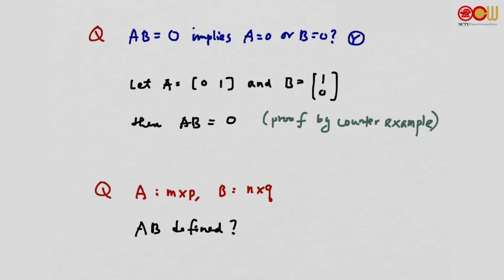Another question: suppose A is an M by P matrix and B is an M by Q matrix. Is the product AB defined? It's not defined, because the number of columns of A must equal the number of rows of B for the product to be defined. So in this case, AB is not defined.